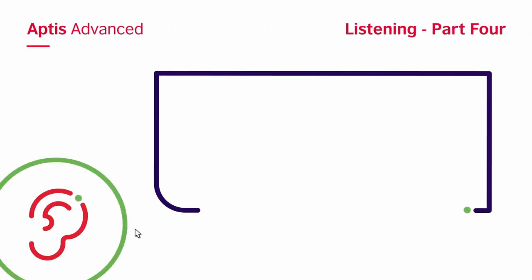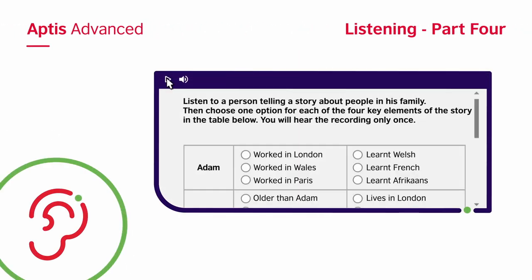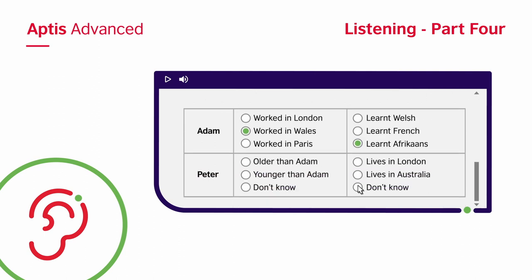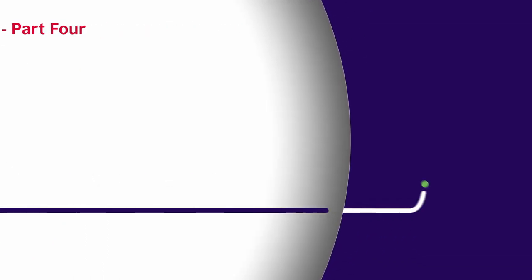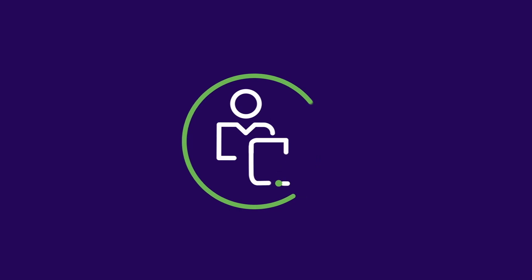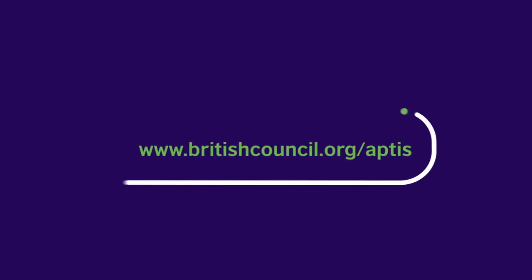In the fourth and final part, you will hear two separate monologues. You need to select the correct answers from a table. The information in the monologue does not appear in the same order as in the table. Remember that in this part, you will hear each monologue only once. For more detailed information, check the Aptis Advanced Candidate Guide on our website.